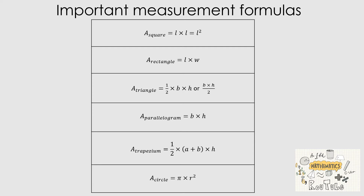All of the sides of a square are the same, so it's length squared for the area. For the area of a rectangle, it's length times width. The area of a triangle uses either one half multiplied by the base multiplied by the height, or base times height divided by 2 — both give the exact same answer. The area of a parallelogram, which has two sets of parallel lines, is the base times the height.